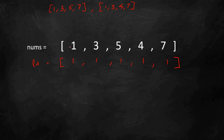We traverse from left to right using two pointers: pointer j starting at 0 and pointer i starting at 1, such that i is always greater than j. We check if nums[j] is less than nums[i] — that means it's an increasing subsequence. For that index i, the length ls[i] becomes ls[j] plus 1. So ls[j] is 1, and 1 plus 1 is 2 — the subsequence 1, 3 has length 2.